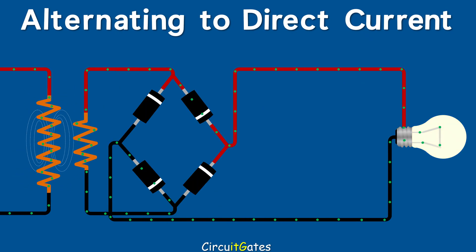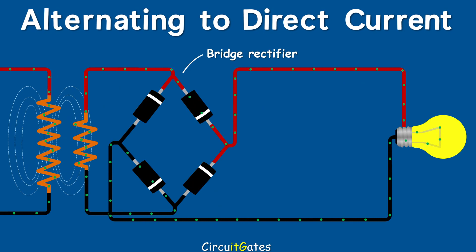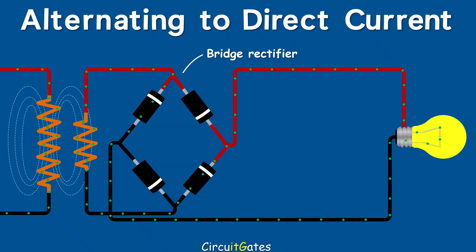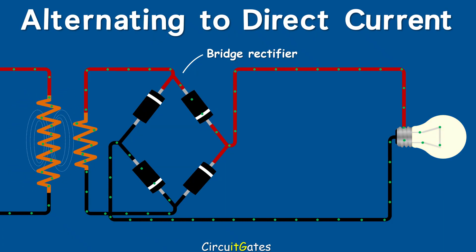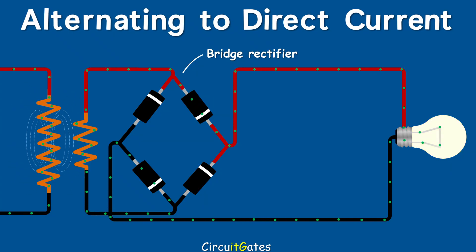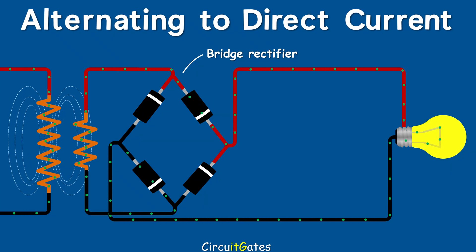A bridge rectifier uses four diodes connected in a way that when AC voltage flows in the first direction, two diodes are forward biased, and when AC changes direction, the other two diodes are forward biased. When diodes are forward biased, they allow current through them and also through the load. This process of rectifying eliminates the change in direction, converting to DC pulsating voltage.